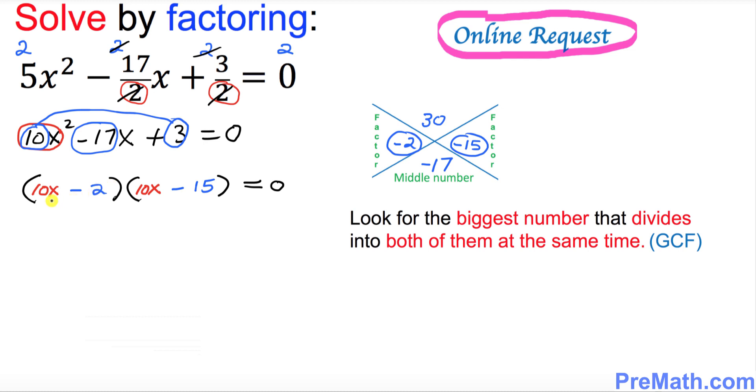In our next step, focus on the very first parentheses. The numbers are 10 and 2. Find the GCF, that means look for the biggest number that divides into both of them at the same time. The GCF of 10 and 2 is 2, so divide them by 2.